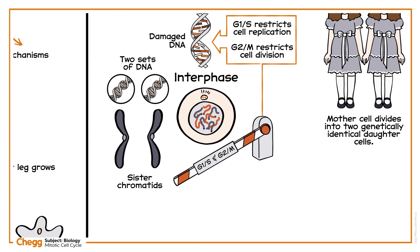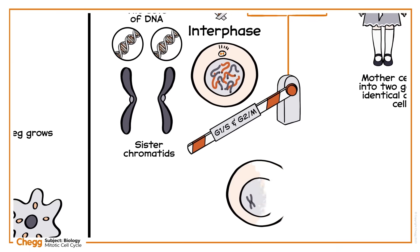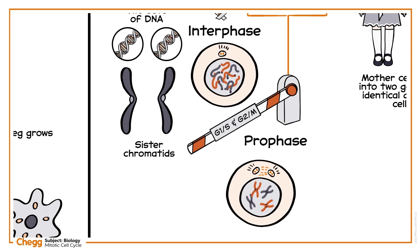After this, the cell enters M phase, which starts from the prophase, where the chromosomes start to condense, and the mitotic spindle is formed, which is made up of microtubules. Also, the nucleolus disappears, which is a sign that the nucleus is getting ready to break down.